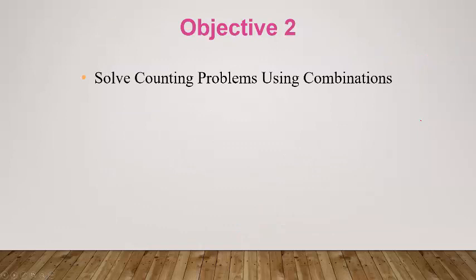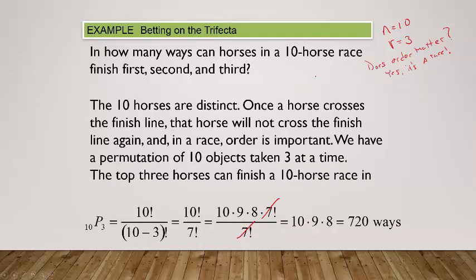Now let's talk about combinations. Going back to permutations — order matters. In most permutation examples, it will be either a race, or the problem will say explicitly that the order is important or the order matters.